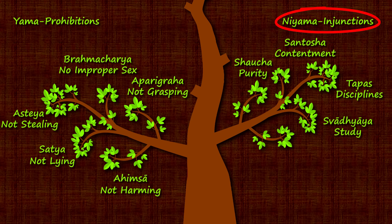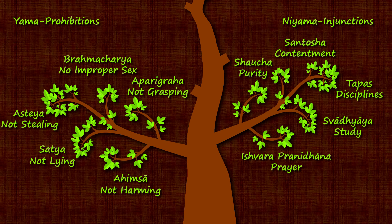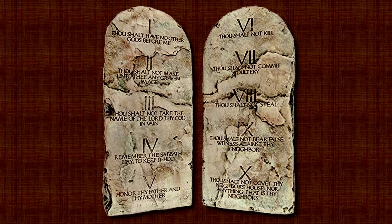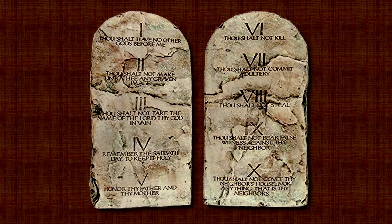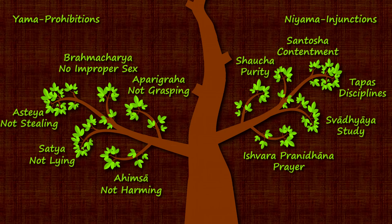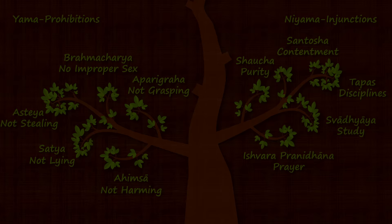In addition to the five yamas, there are five niyamas that mandate the cultivation of dharmic virtues. Shaucha mandates purity of body and mind. Santosa mandates contentment and forbearance. Tapas mandates spiritual disciplines like fasting. Swadhyaya mandates spiritual study. And Ishvara pranidhana mandates prayer and worship.